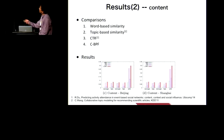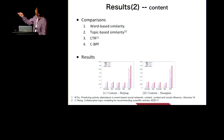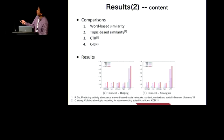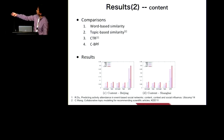The second comparison is about testing content information only. We used four methods and found that CBPF, which considers content information, can gain better results. We should note that the second method is topical-based similarity, which was adopted in the baseline paper for event recommendation.